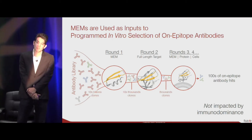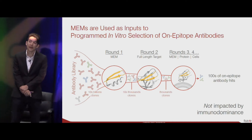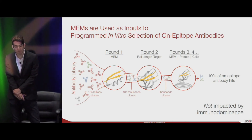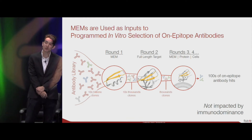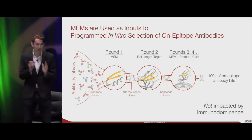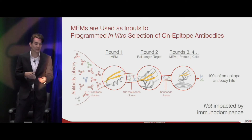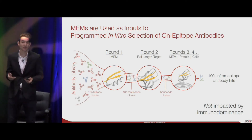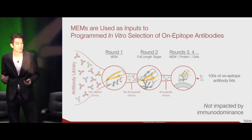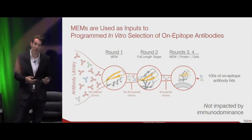Now that we have these MEM molecules, how do we use them to pull out antibodies specific to our epitope of interest? We do this via an in vitro selection where we use our MEMs right up front at round one, starting from an antibody library of tens of billions of clones. We pull out those tens of thousands of clones that have a propensity to bind our epitope as presented by our MEM molecule.